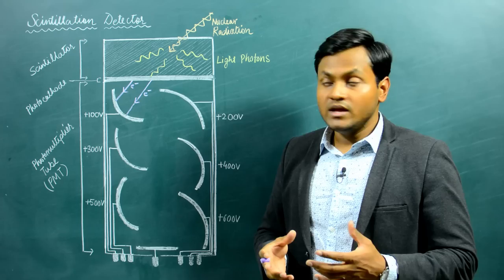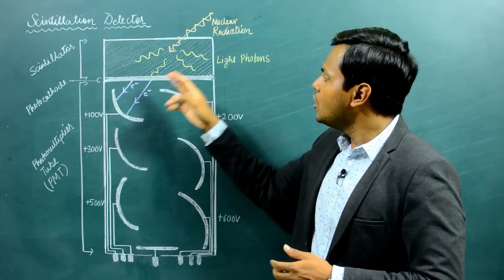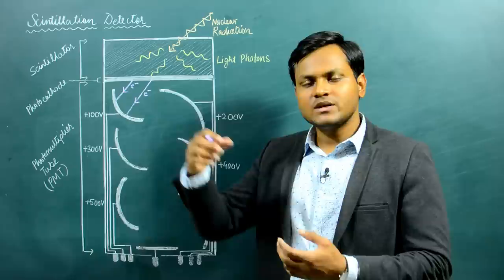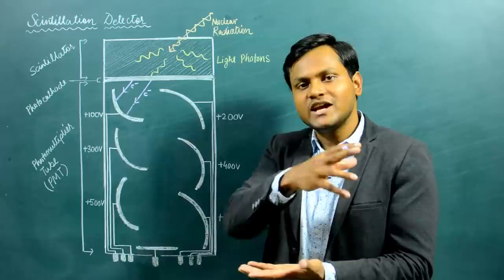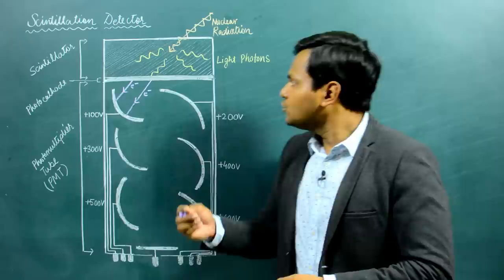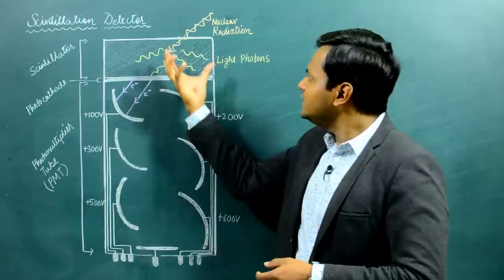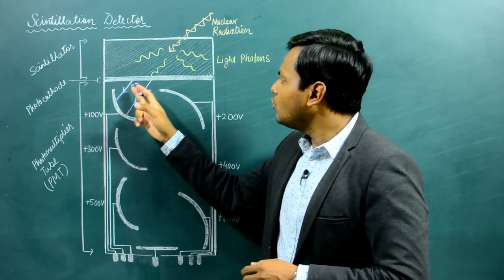All of these photons are focused onto a photo cathode. The photo cathode is simply a material that can experience the photoelectric effect. Whenever incident photons fall onto a metal surface and the energy of the photons is sufficient, electrons are ejected from the metal surface — this is the photoelectric effect. A photo cathode material is placed on top of the photomultiplier tube. When the light photons created as an incident particle enters the scintillator are focused onto the photo cathode, it results in the photoelectric effect and the emission of primary photo electrons.